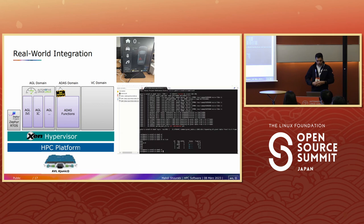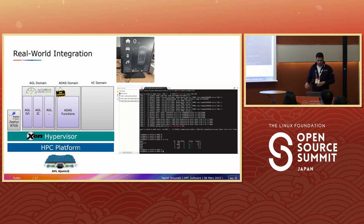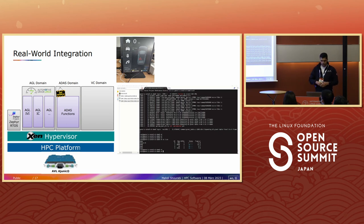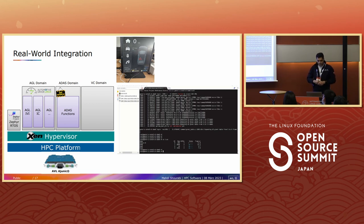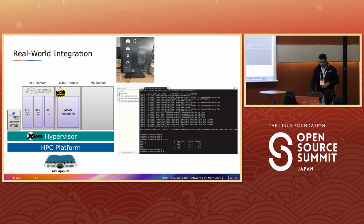The AGL applications running there include AGL IVI and AGL IC, among others. You can see that AGL IVI is running on the display — not very well-tuned to the display size, but it is working. The different domains of Xen are also loading and running in the background. In the ADAS domain we have our own developments — that domain is not yet shown in the console; it is under construction and we're still working on it.